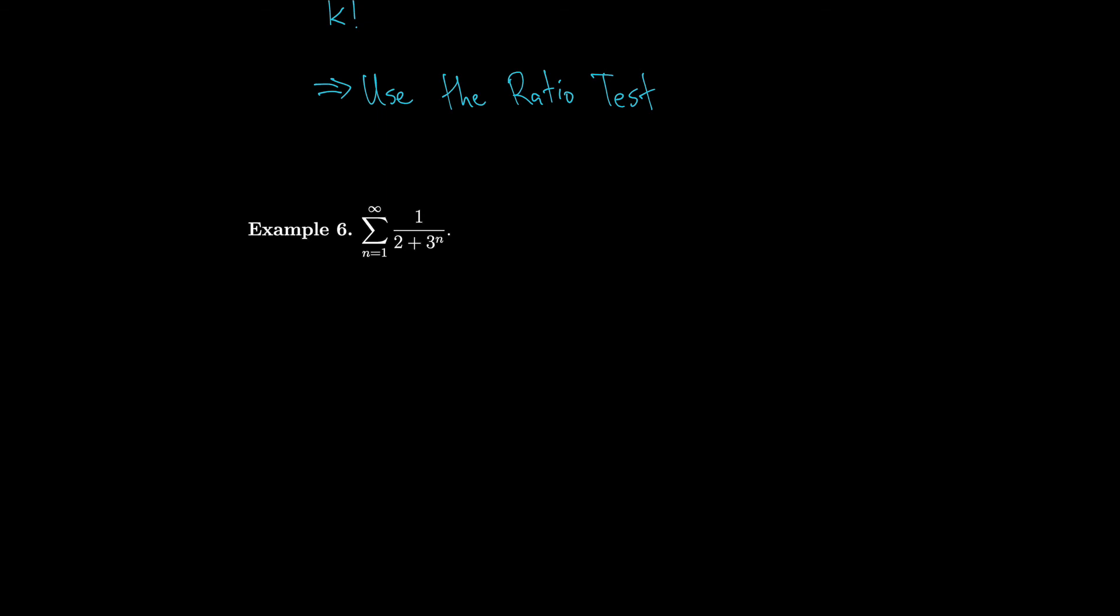Okay notice for this series we have 1/3^n right over there which is geometric. So there's an easy comparison. 1/(2+3^n) is smaller than 1/3^n because it has a bigger denominator. It's smaller than a geometric series that we know converges because 1/3 is smaller than 1. So we should use the comparison test.